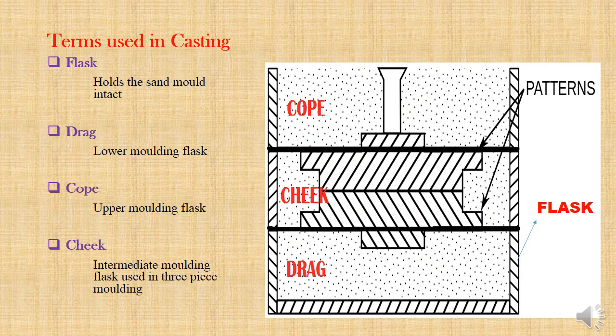Now we are going to see the terms used in casting. Small or medium sized castings are made in a flask, that is a box shaped container which confines the mold. Flask is made of two parts — the top portion is called the cope and the lower portion is called the drag. In some complicated castings the flask will be made of three parts, and the center one is called cheek.